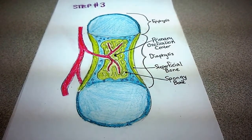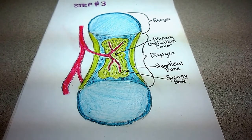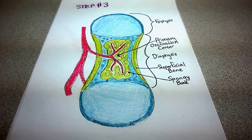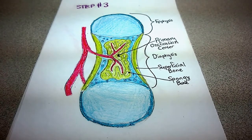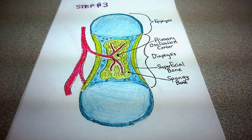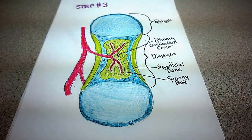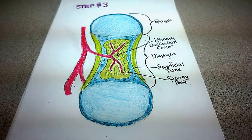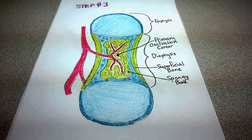The blood will bring fibroblasts into the cavity that will differentiate into osteoblasts. The osteoblasts will start at the primary ossification center located in the center of the diaphysis. From there, the osteoblasts will work towards the epiphysis, converting cartilage to bone.